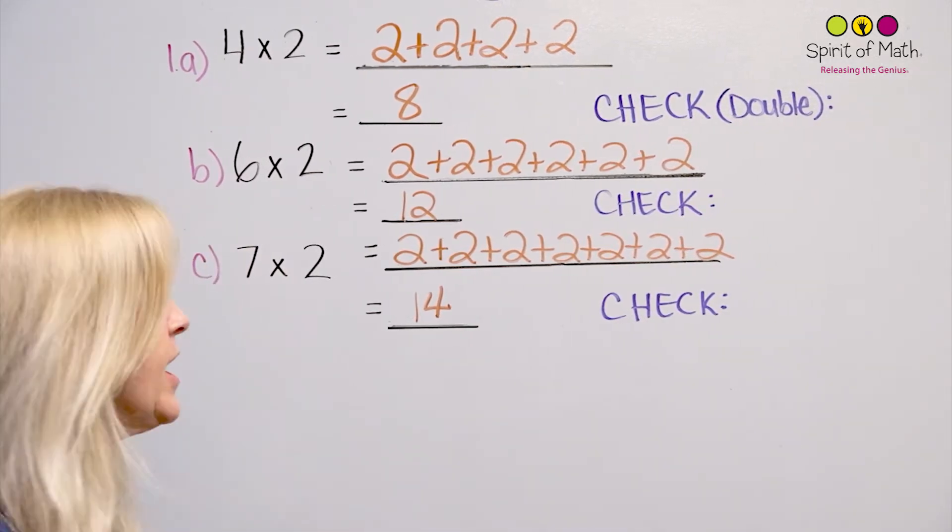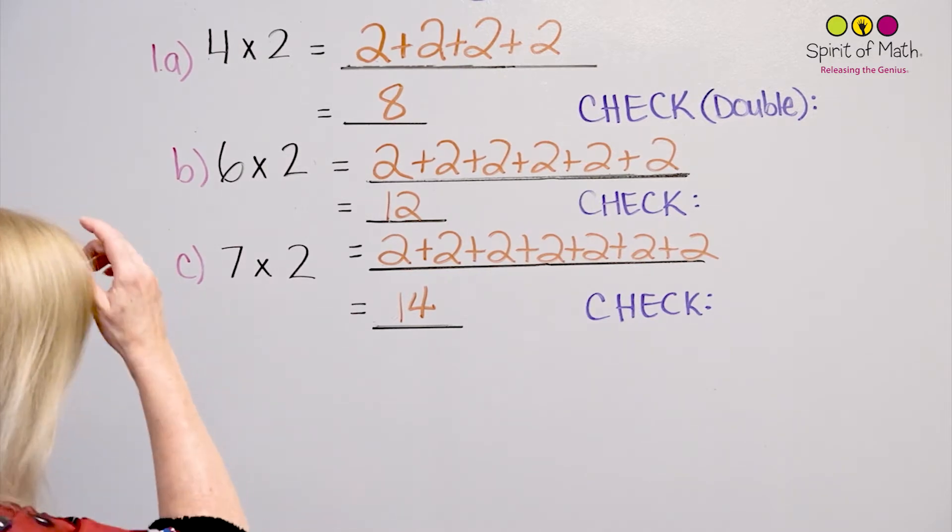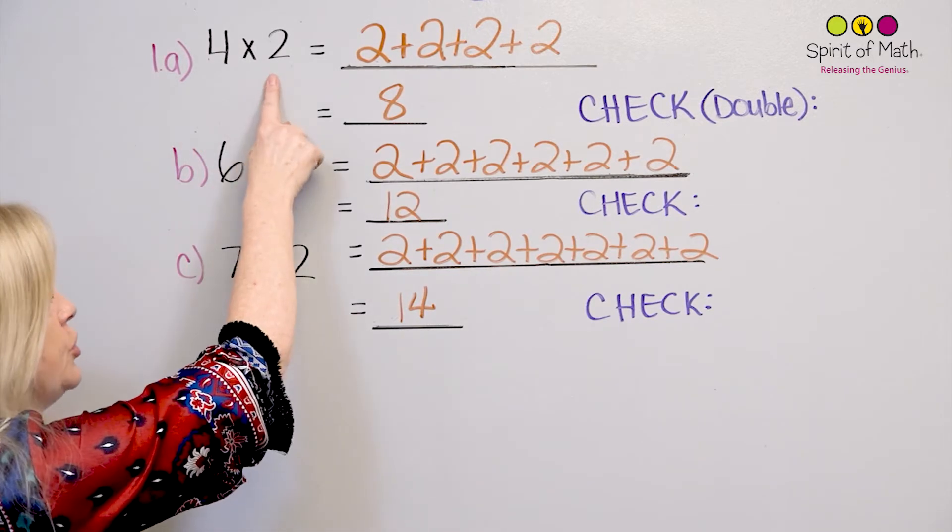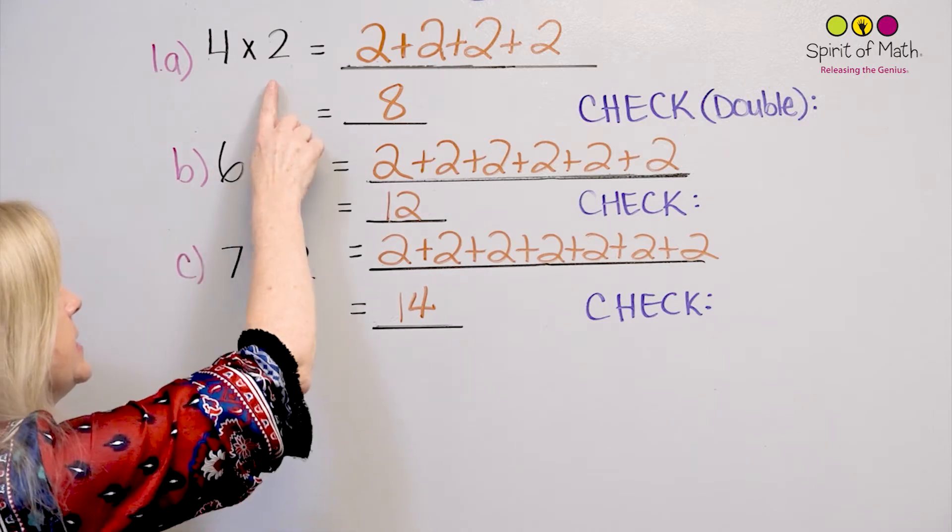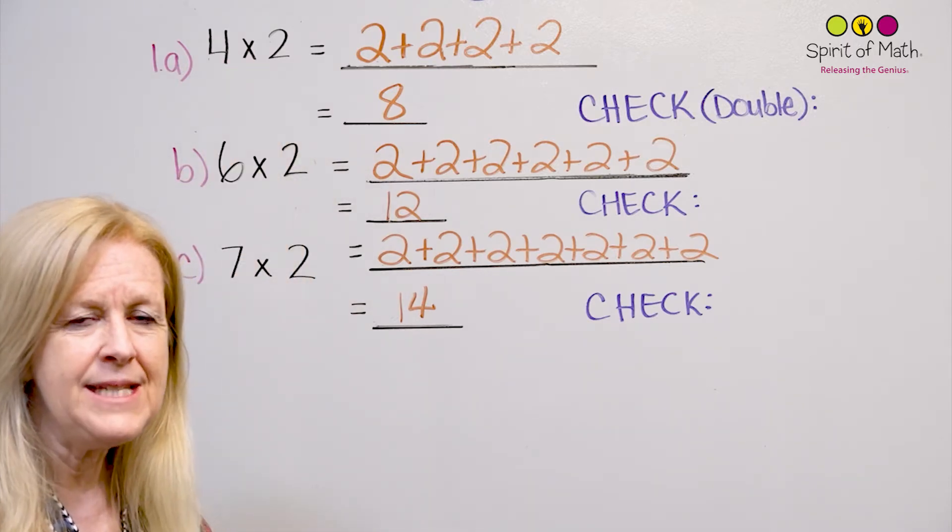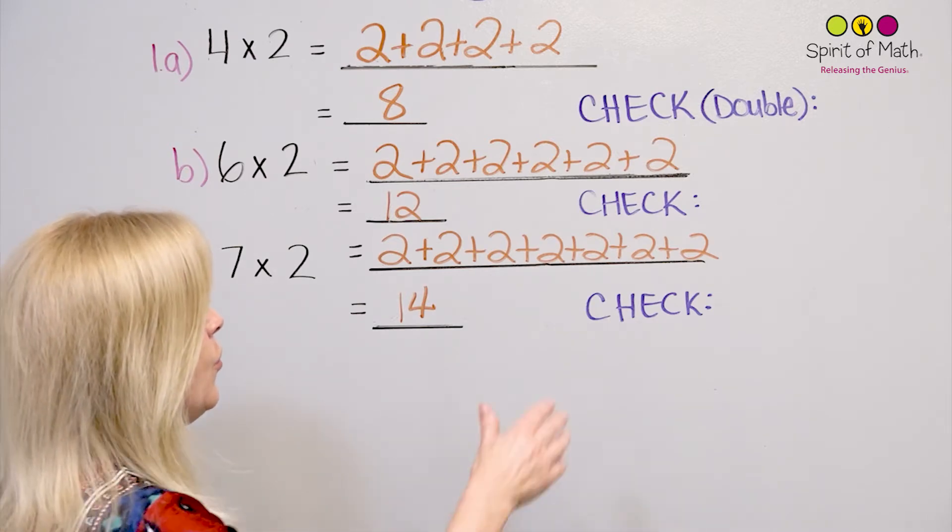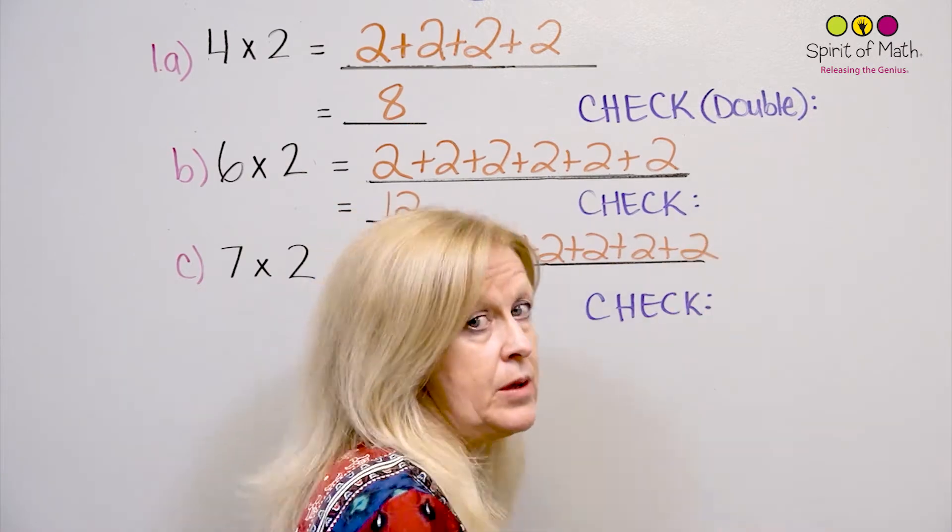Now, I have a check here, and this is another way to think about it. Because when you've got 4 groups of 2, well, that's like saying double the 4. Whenever you times by 2, it means double the 4, or double that number. Okay? So when you says check, let's double. Watch this.